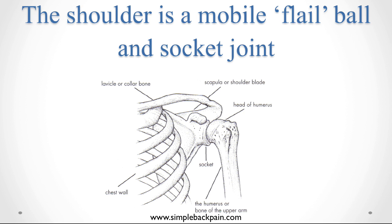Let me show you a little bit about the anatomy of the shoulder. Here it is. It's a very loose joint — what we call a flail joint. It's floppy. It sacrifices stability for mobility. Here's the ball and socket. Here's a very shallow little cup, and here's the head of the humerus, the upper arm bone. It sort of skids around on that.